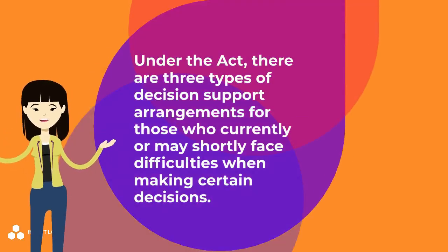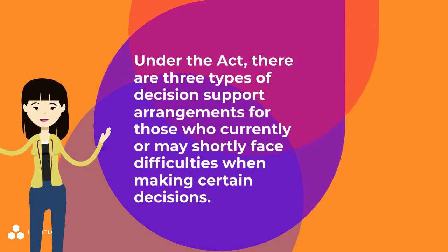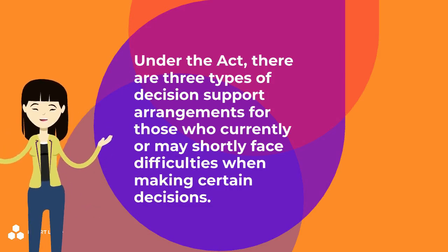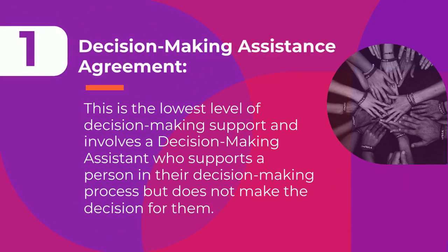Decision Support Arrangements. Under the Act, there are three types of decision support arrangements for those who currently or may shortly face difficulties when making certain decisions. These are: 1) Decision Making Assistance Agreement — this is the lowest level of decision-making support and involves a decision-making assistant who supports a person in their decision-making process but does not make the decision for them.